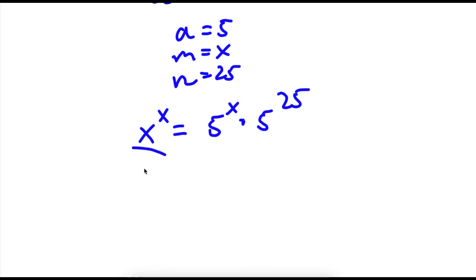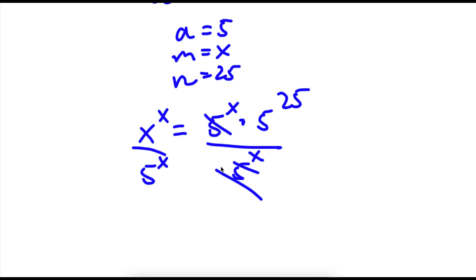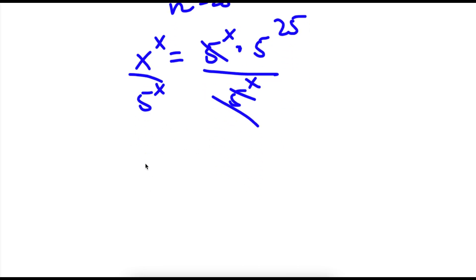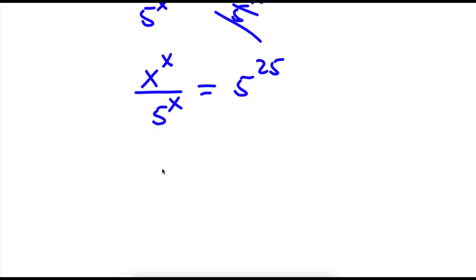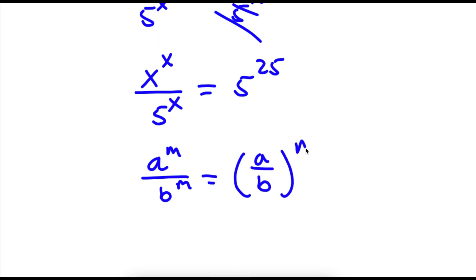Now I'm going to divide both sides by 5 to the power of x. By doing that, these two will cancel out. So for my left hand side, I will have x to the power of x over 5 to the power of x, and on my right hand side, all I have left is 5 to the power of 25. Now if I have something in the form a to the power of m over b to the power of m, I can rewrite this as a over b to the power of m.